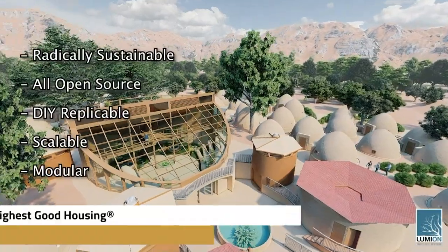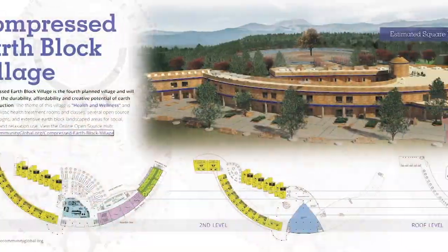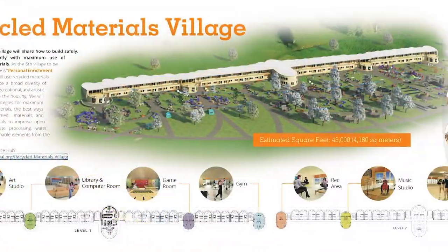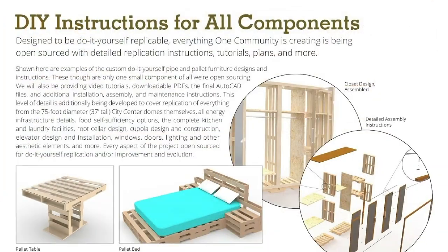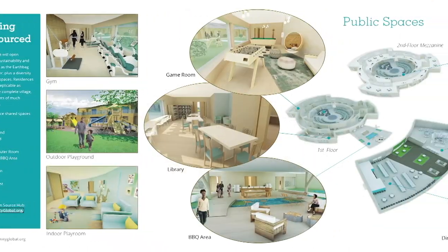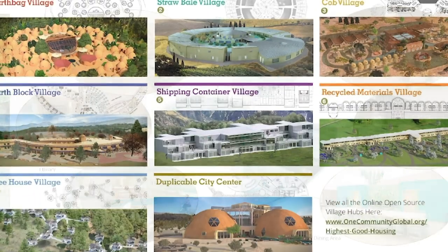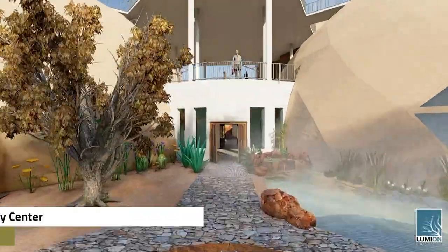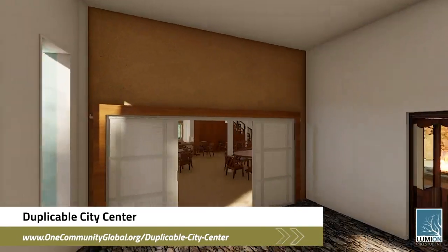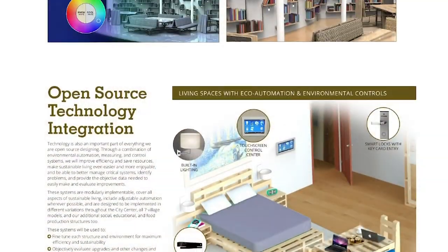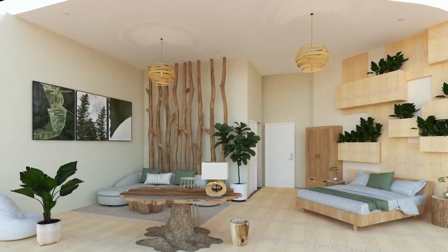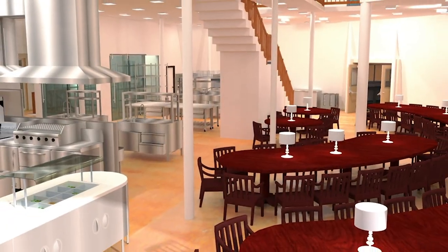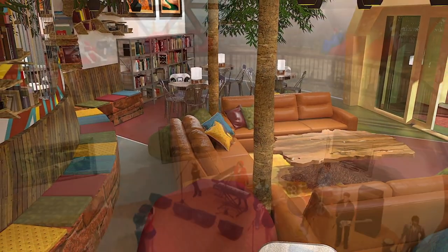The One Community approach to Highest Good Housing is eco-artistic home building that is affordable, sustainable, do-it-yourself duplicable, resource and space efficient, and consists of seven different sustainably constructed village models. One Community is also creating an open source duplicable city center designed to be LEED Platinum certified, provide 12 guest rooms, dining for over 150 people, and laundry and recreation space for over 300 people, all while saving money, time, space, and resources.